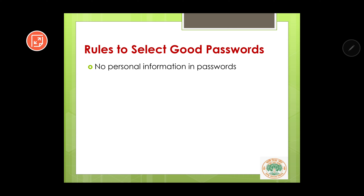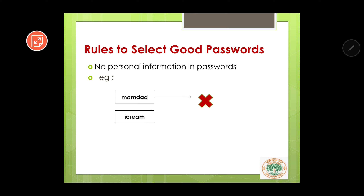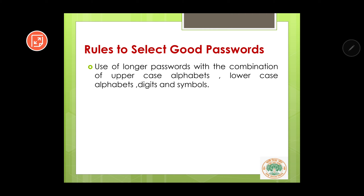The second rule is: no personal information in passwords. You should not give your address, phone number, or common things related to your day-to-day life as your password, as unauthorized users may easily guess those things. For example, 'mom dad,' 'ice cream' (if you love ice cream), or your own name like 'Ishani' are not recommended as passwords. Always remember — you should not give personal information in your password.